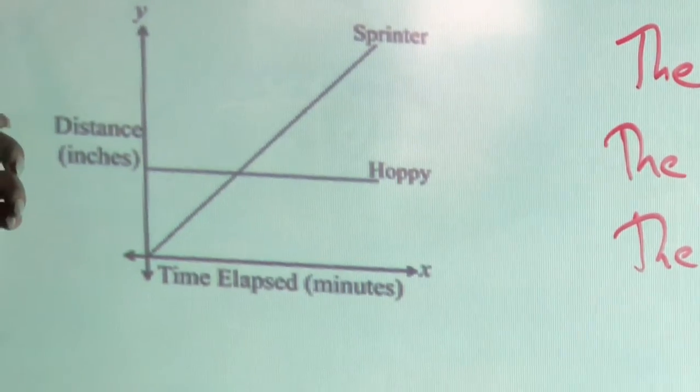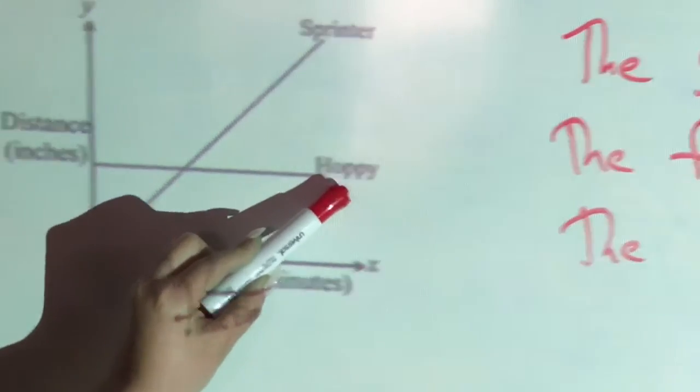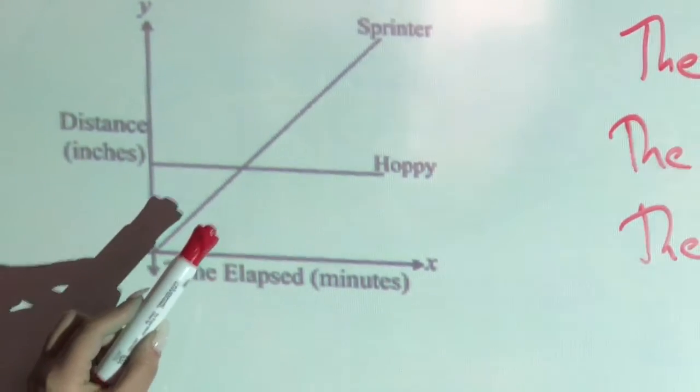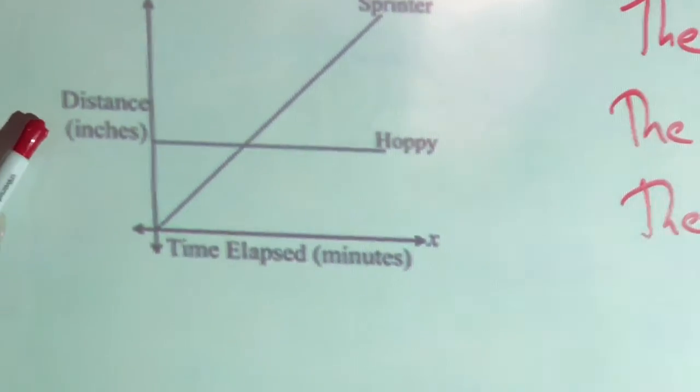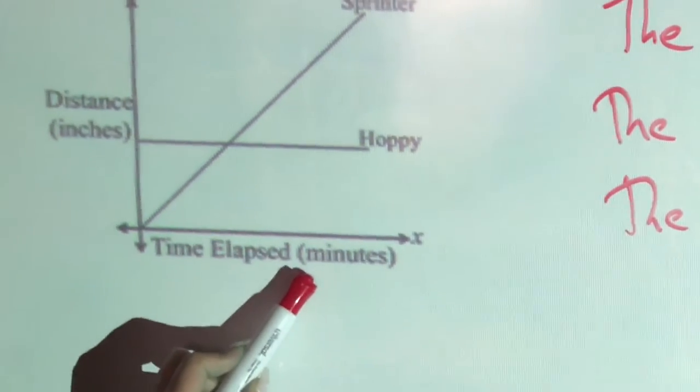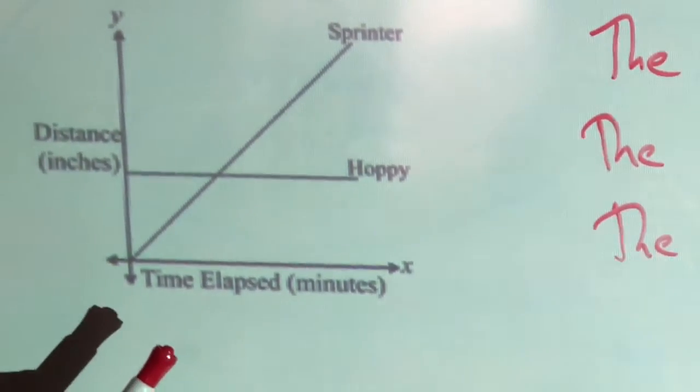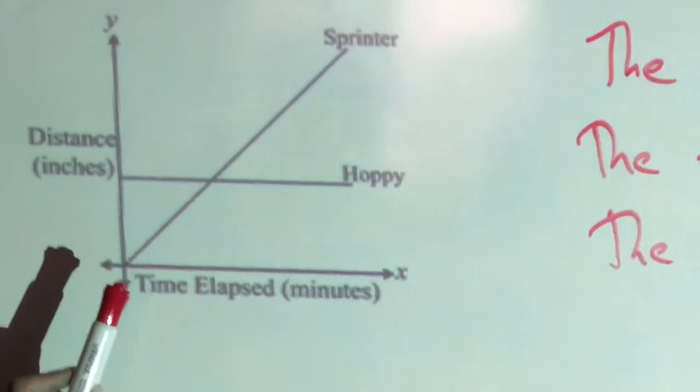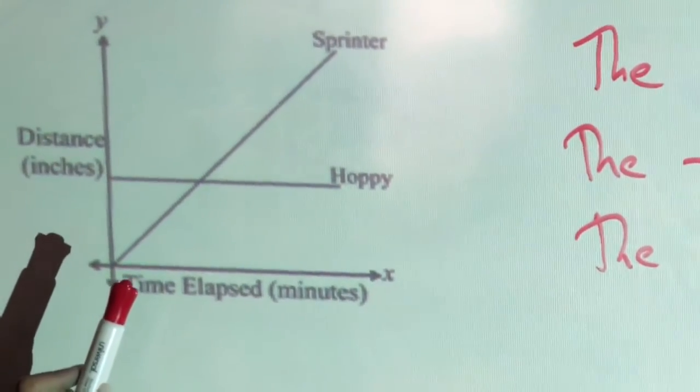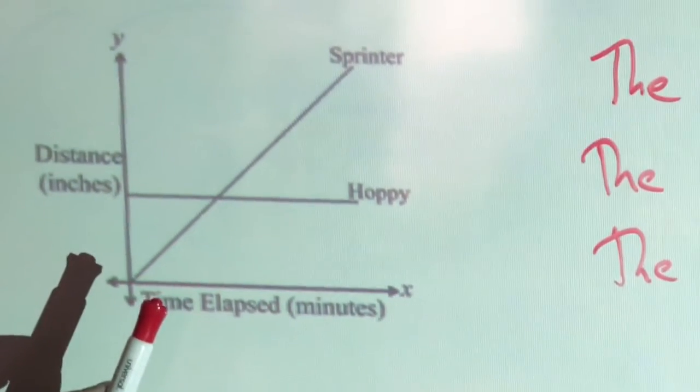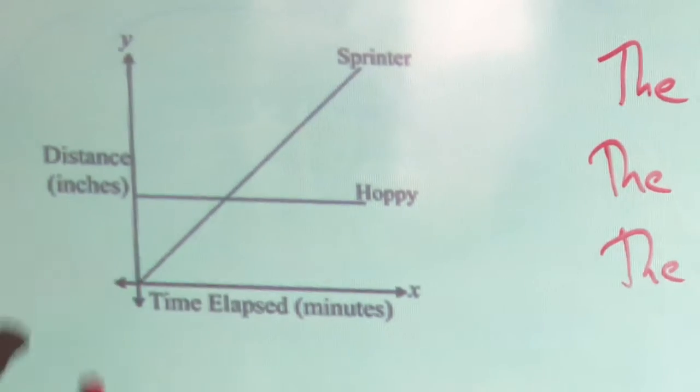That's a flat line with Hoppy. And what do we know about that? We know that there's no distance changing with the time elapsed. In other words, as we move along in time, one second, two seconds, or it's minutes actually, one minute, two minutes, three minutes, the distance is not changing. So guess what? Hoppy is a turtle that is not moving. Maybe they're baking themselves in the sun or something, which turtles love to do, but Mr. Turtle or Mrs. Turtle is not moving at all.